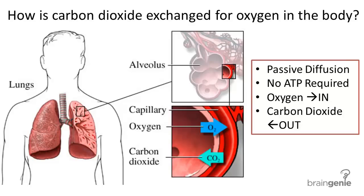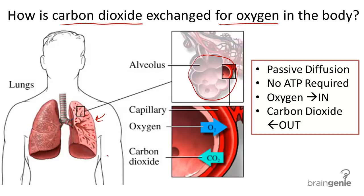Gas exchange — what is gas exchange and how do we accomplish it in the body? Gas exchange is simply the exchange of carbon dioxide for oxygen in the body. So how does it work? Gas exchange occurs at the alveoli, inside deep into the lungs of the body.